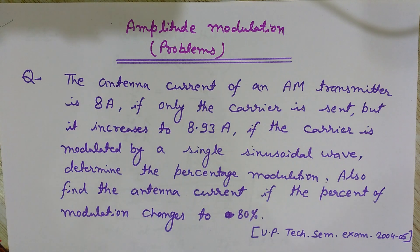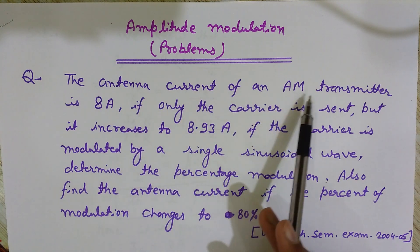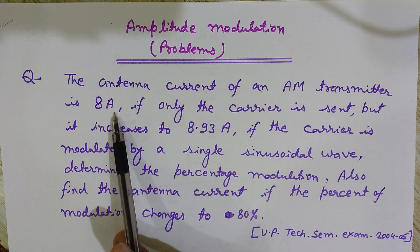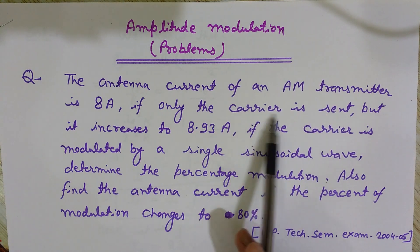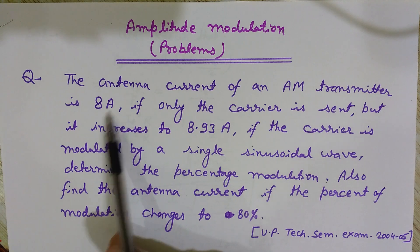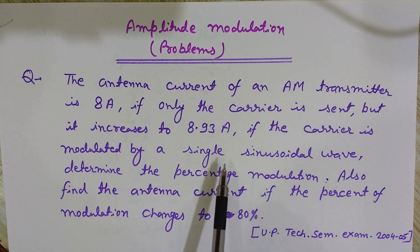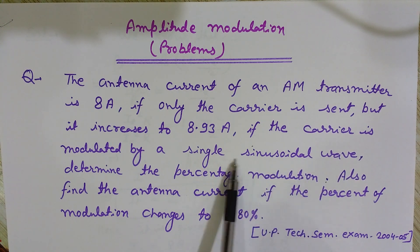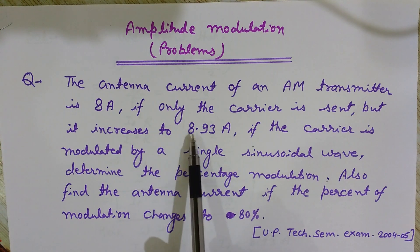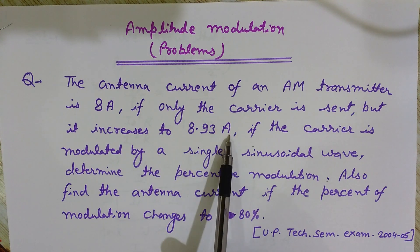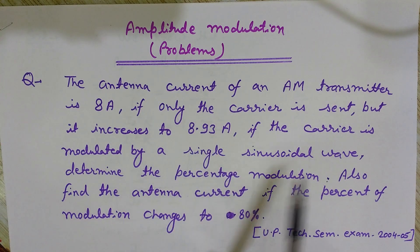This problem is related to amplitude modulation. It states that the antenna current of an AM transmitter is 8 amperes when only the carrier is sent. But when we modulate it with a single sinusoidal modulating signal, the antenna current increases to 8.93 amperes — there is an increase after modulation of the carrier wave.